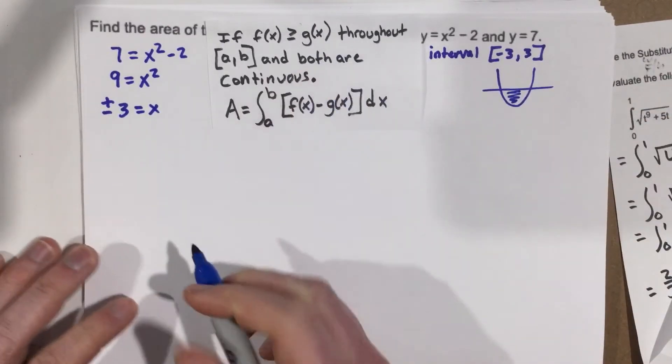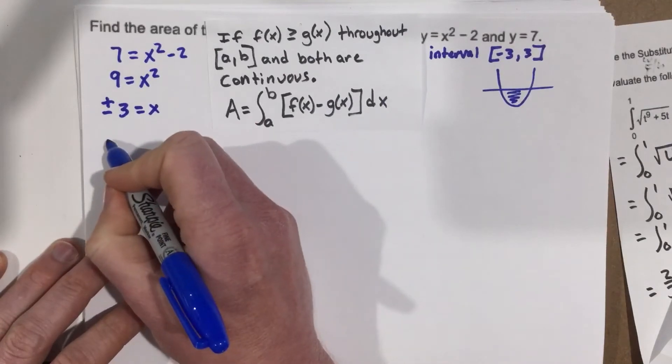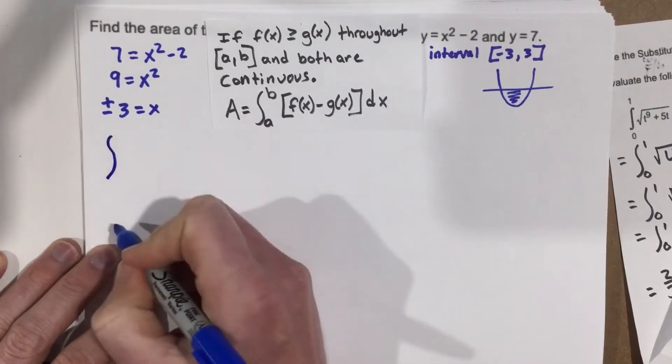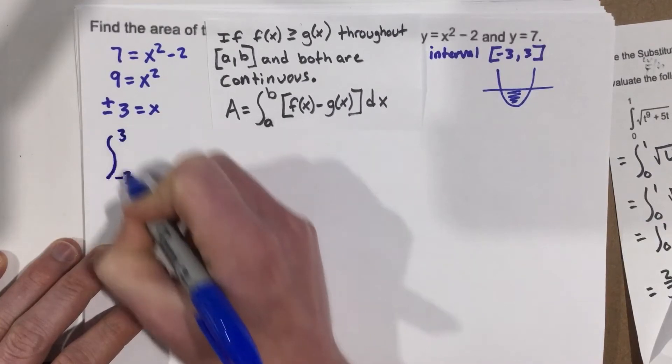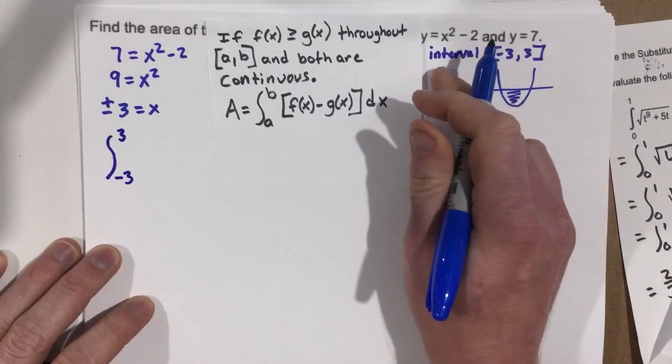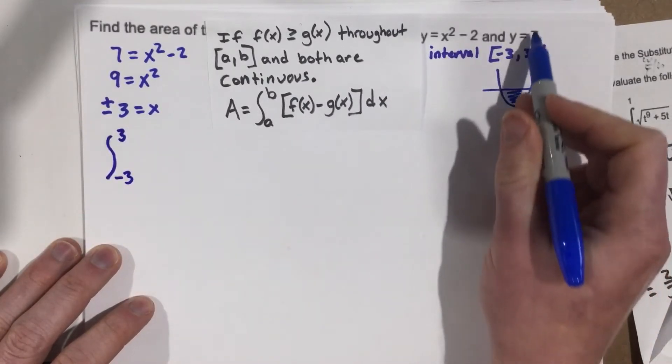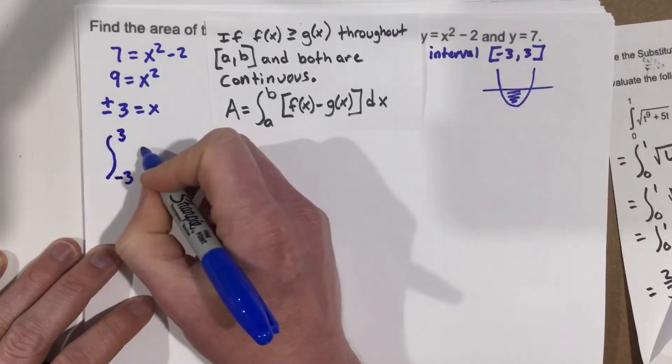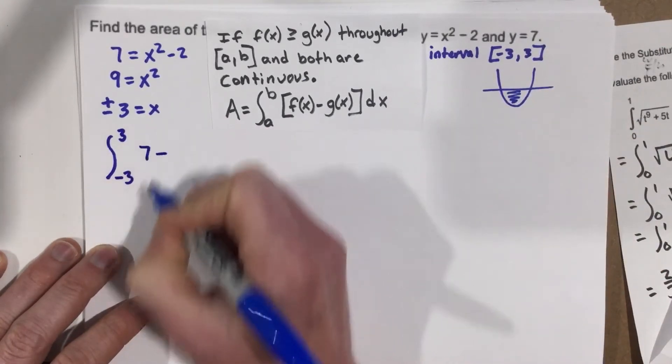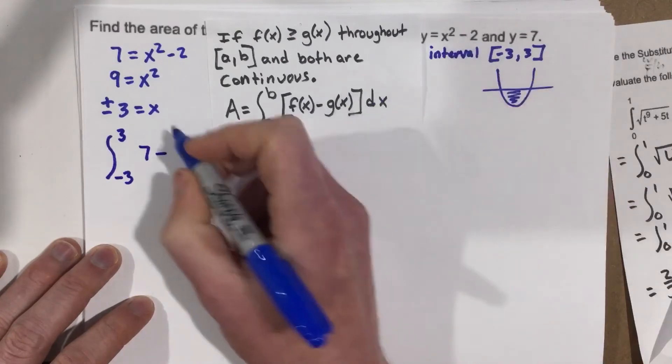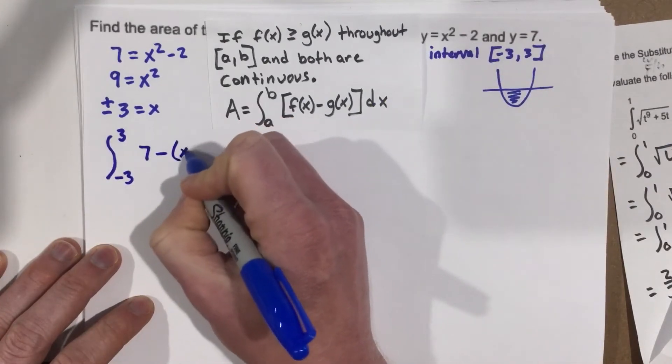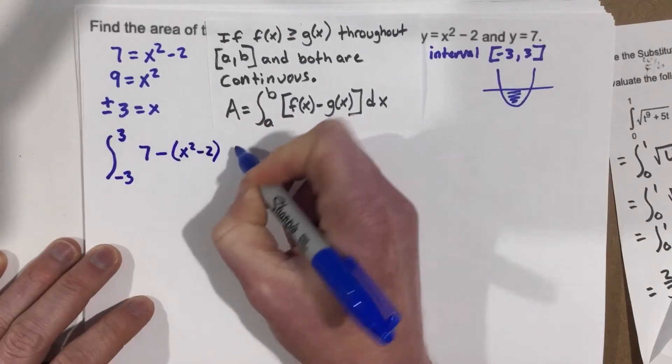I'll just use this to set this up, and then I'm going to get rid of it. So integral from negative 3 to 3, f of x, well, that's going to be my upper function, so that's going to be the 7. So I'm going to say that 7 minus g of x, which is x squared minus 2 dx.